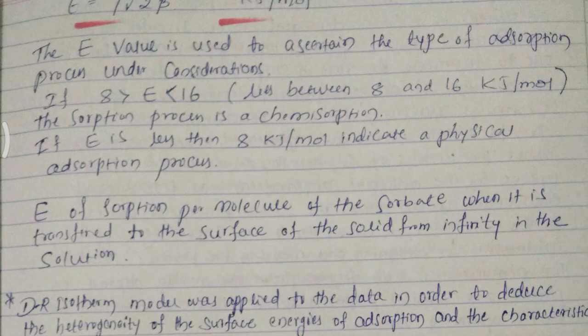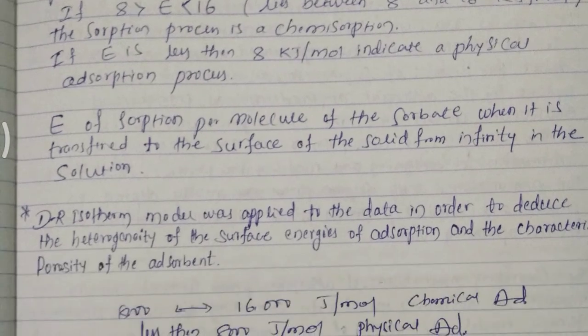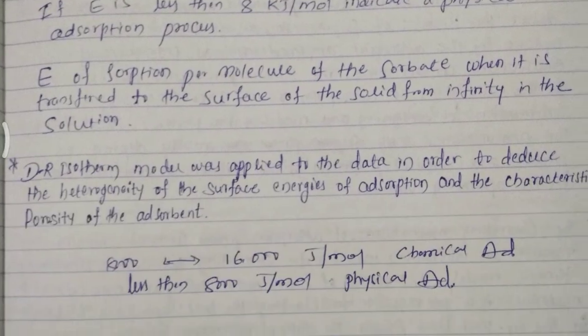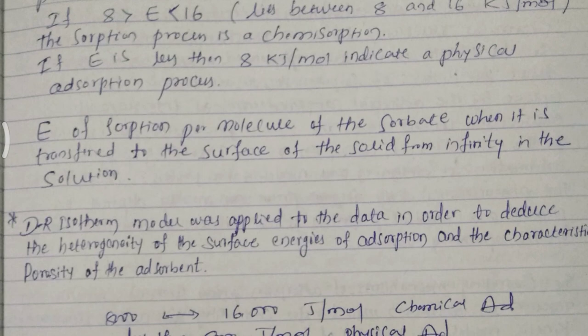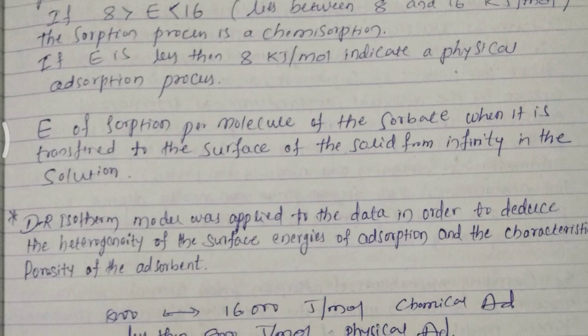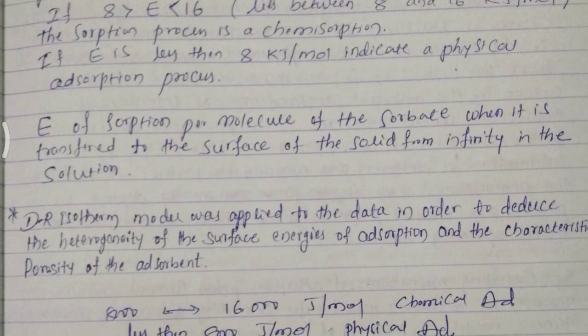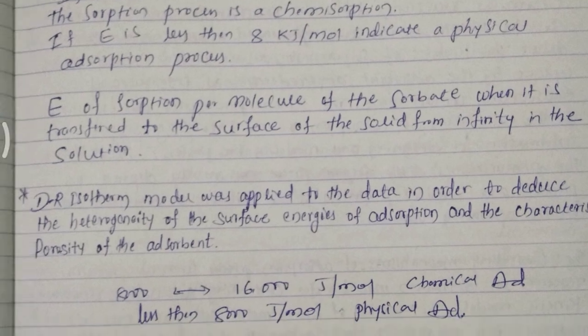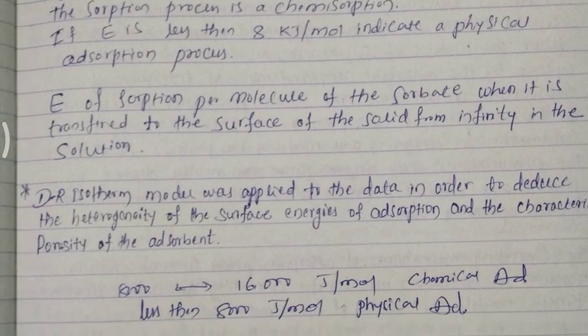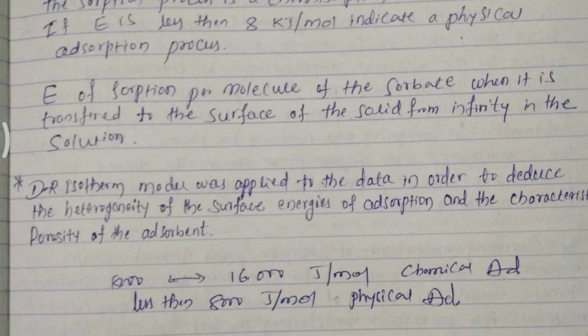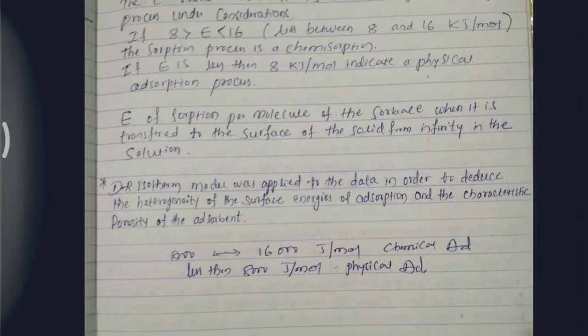DR isotherm model was applied to the data in order to reduce the heterogeneity of the surface energies of absorption and the characteristic porosity of the absorbent. If the value is 8 to 16, that is chemical absorption. Less than 8, that is physical absorption.